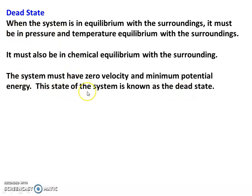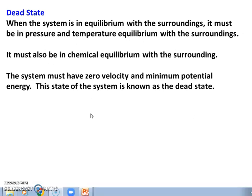In the dead state, the system is in equilibrium with the surrounding — pressure and temperature are equal to the surrounding. This dead state is used as a reference point for calculating availability. When a system rejects heat to the surrounding and comes to equilibrium with the surrounding, that condition is called the dead state.